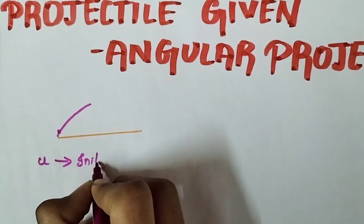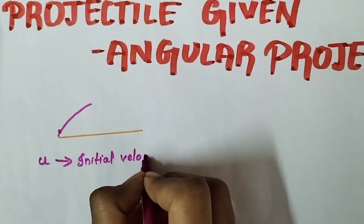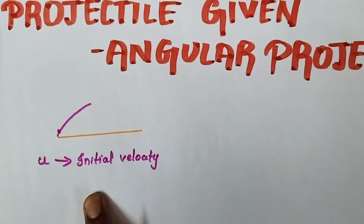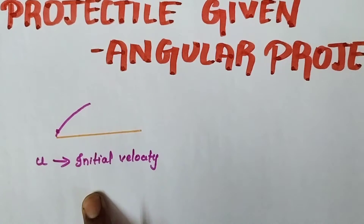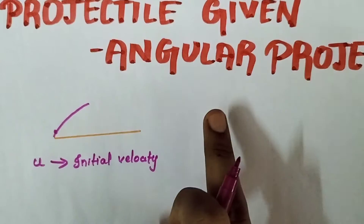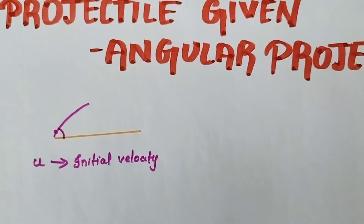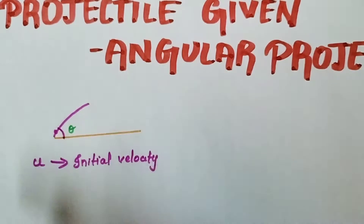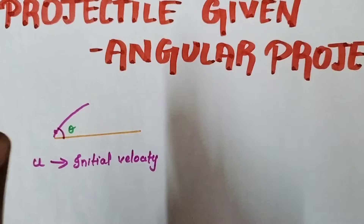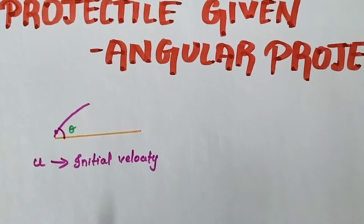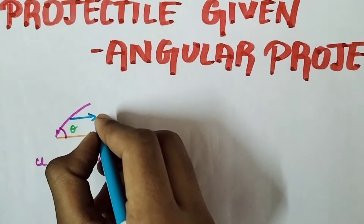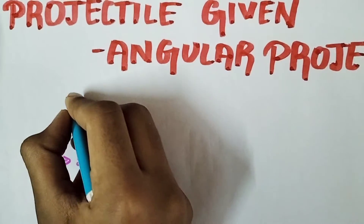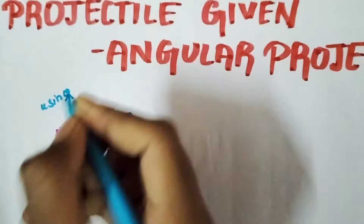This initial velocity U is given while throwing the ball with angular projection, at angle theta. With any angle you may project. When you throw a ball into free space above the ground, it has two components: one is the horizontal component U cosθ, and the other one is the vertical component U sinθ.